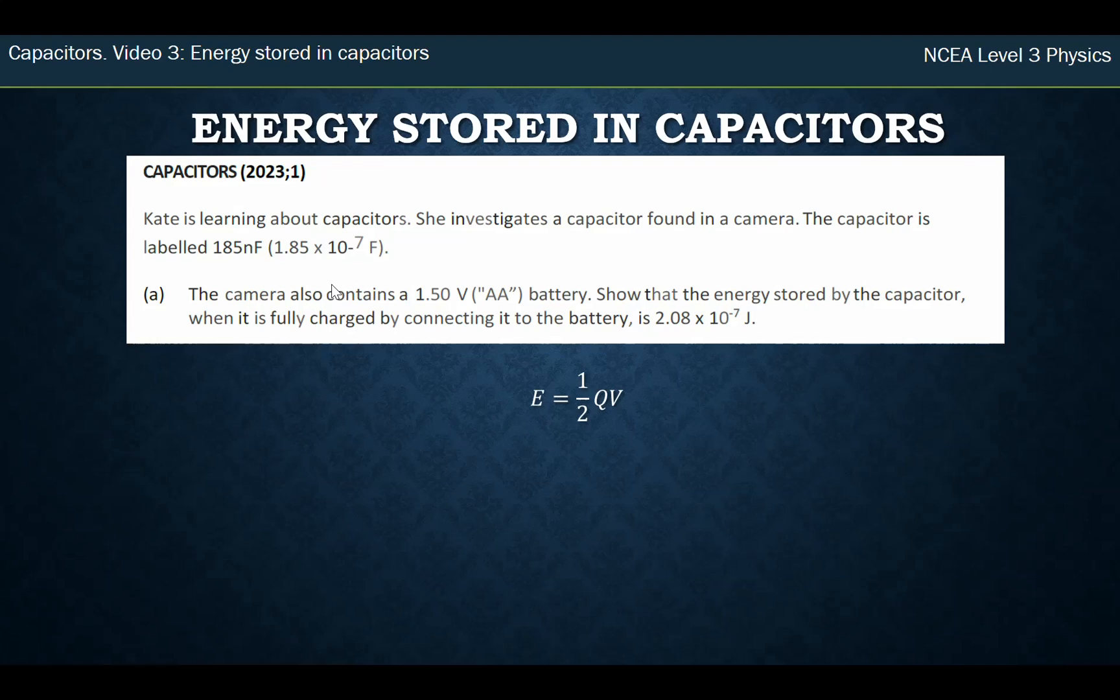You're given the capacitance and the voltage, so you're not given the charge. You could work the charge out using this formula here, and that's one way of going through it. But as you get better in physics, this is the method you should do: you should try and substitute one formula into another. So in this one, we substitute it in, and we get E = 1/2 CV².